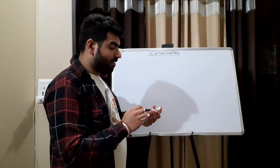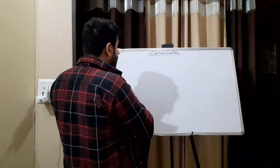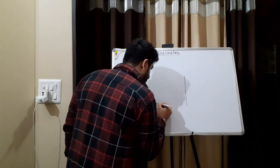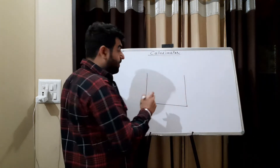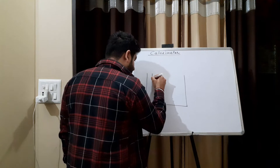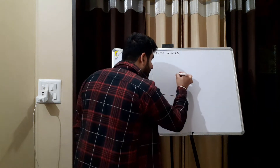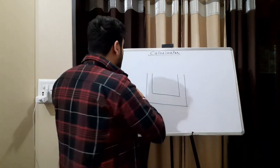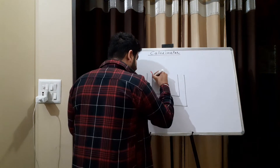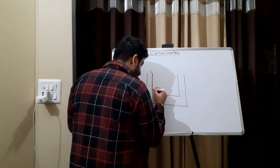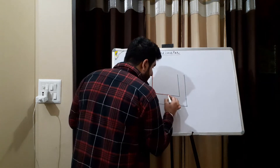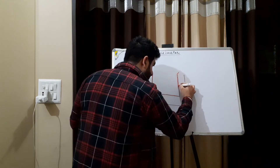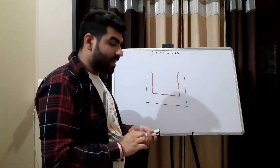We are going to draw the schematic diagram of the calorimeter. The calorimeter has an outer frame which is known as the wooden jacket. Then there is the inner part, which is actually the copper vessel — shown here in red — in which we have the various substances.